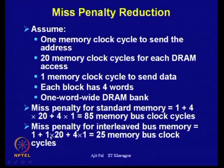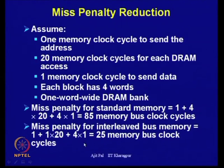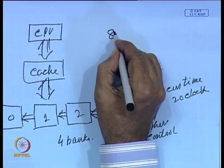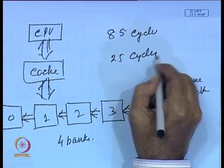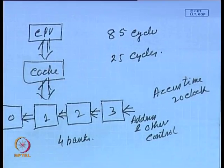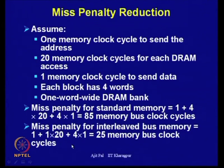In an interleaved memory, the miss penalty is: 1 clock cycle to supply the address, 20 clock cycles for the memory banks to provide data, then 4 clock cycles to read one word from each bank — totaling 25 memory bus clock cycles to transfer 4 words to cache. This is a significant improvement: 25 cycles instead of 85, giving roughly a 4× speedup.